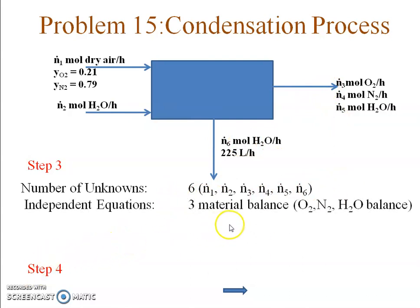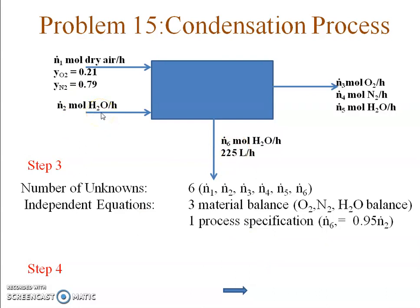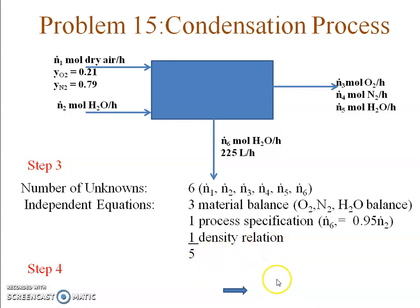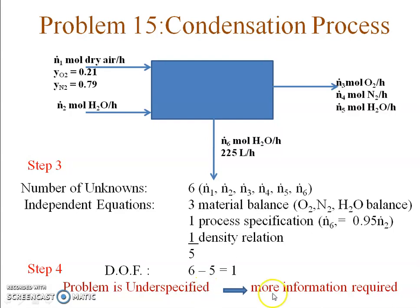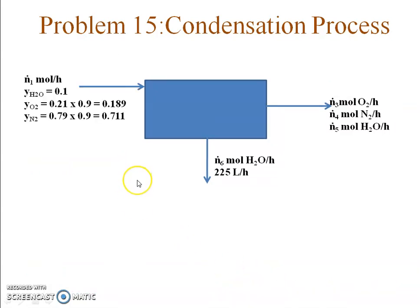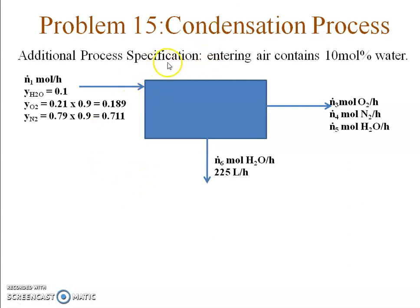For independent equations: three material balances (on O2, N2, and H2O), one process specification (Ṅ6 = 95% of Ṅ2), and one density relation — assuming the condensed water has density 1 kg/liter. That gives five equations total. Degree of freedom = 6 unknowns − 5 equations = 1. The problem is under-specified; I need exactly one more equation.